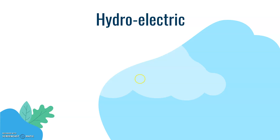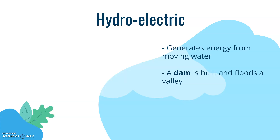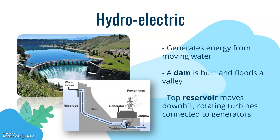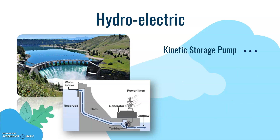Next we have hydroelectric, which generates energy from moving water. A dam is built where a river previously flowed, and the valley behind is flooded to create a reservoir at the top. Water moves downhill under gravity, rotating turbines connected to generators — this process sounds very familiar. It can also be used as a kinetic storage pump, where 'kinetic' means movement energy.